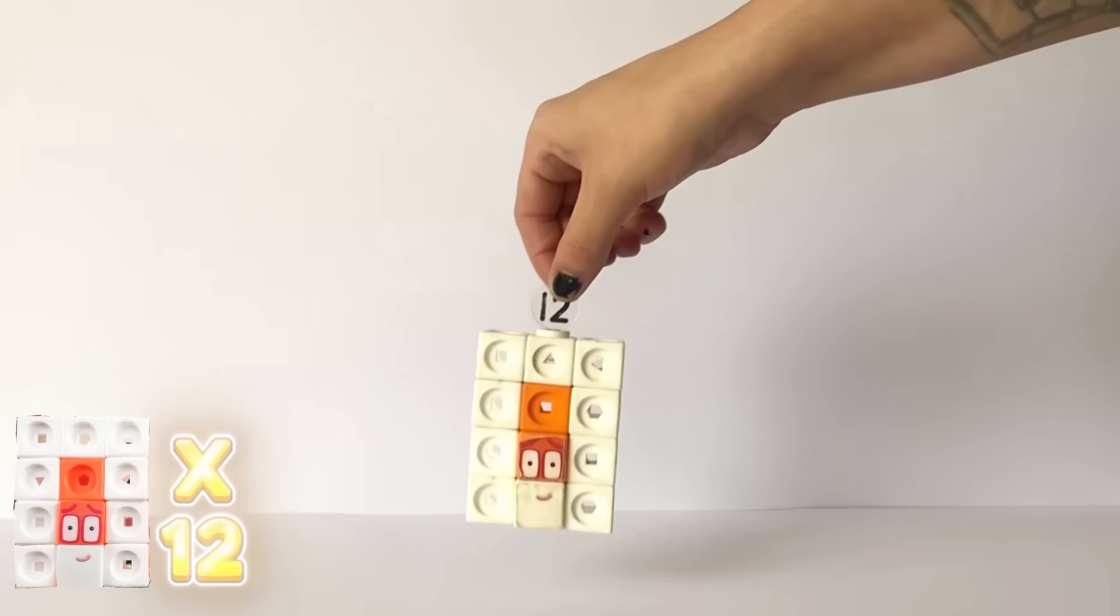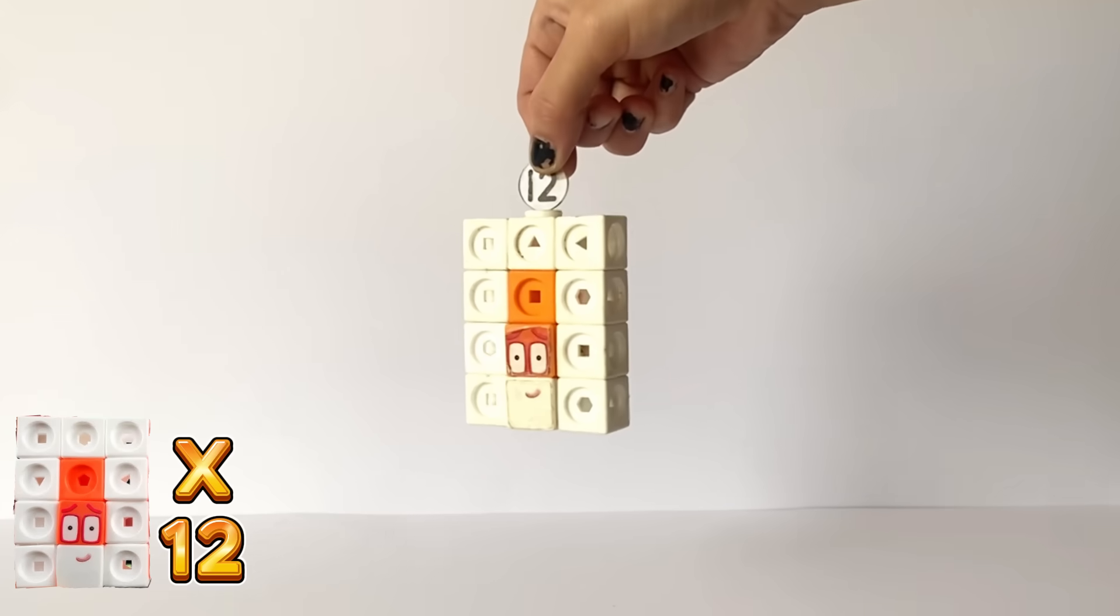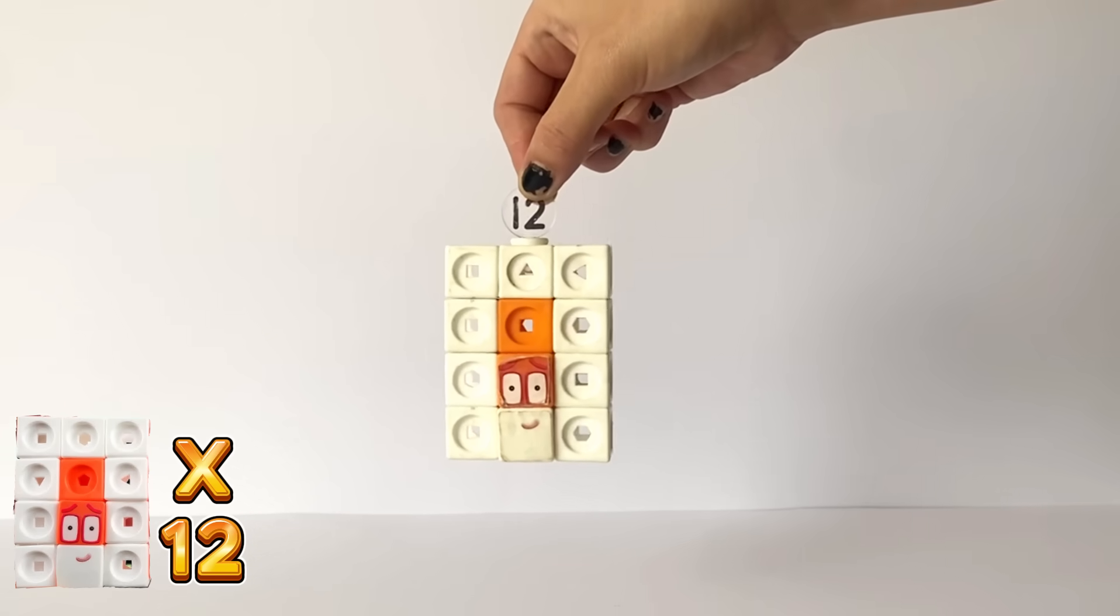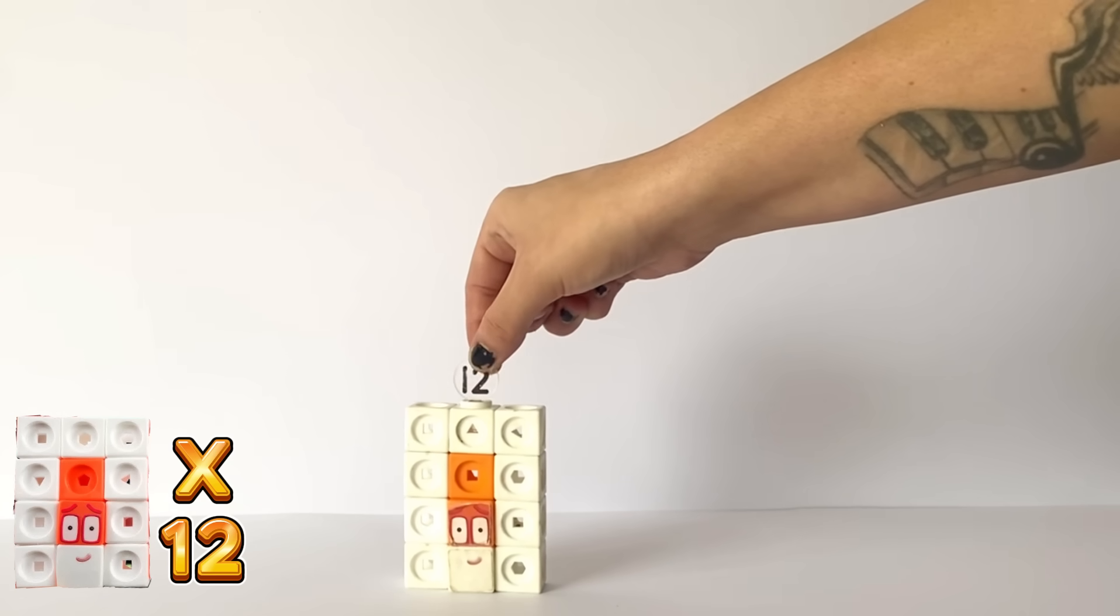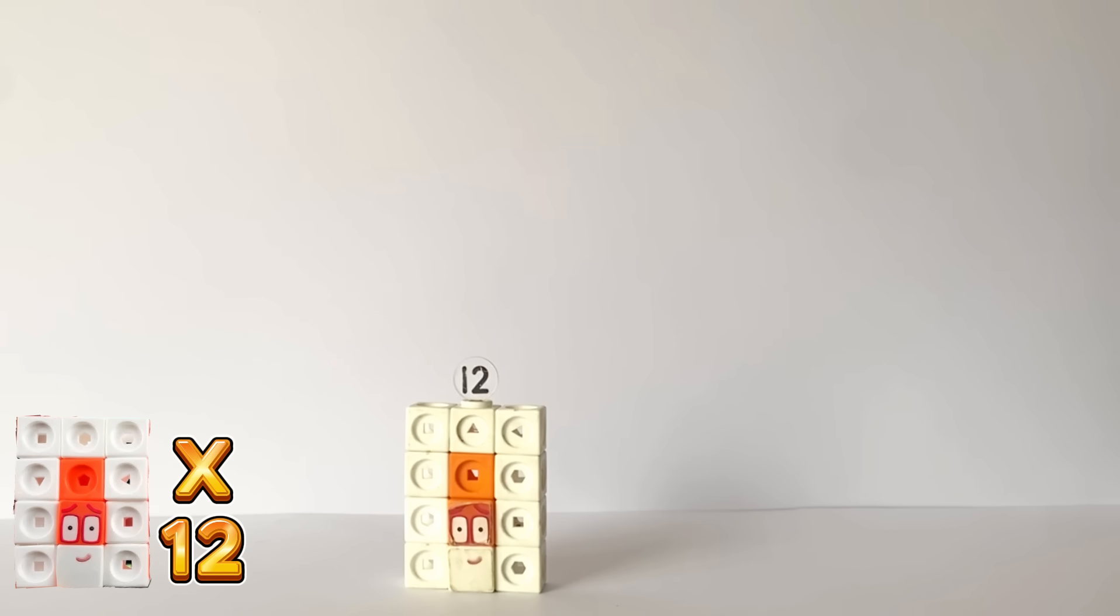The next times table we are covering today is the 12 times table. So first we will have NumberBlock 12 in its traditional 3 by 4 rectangle formation. So 1 lot of 12 equals 12.